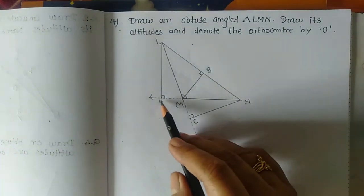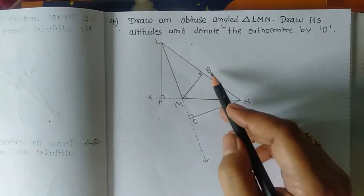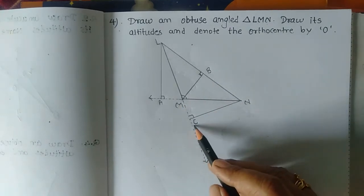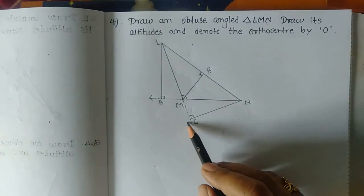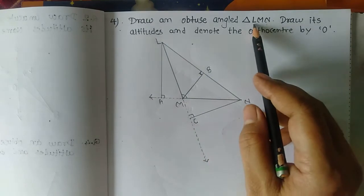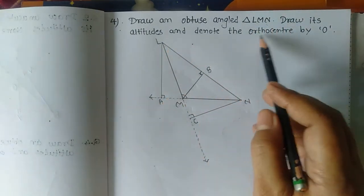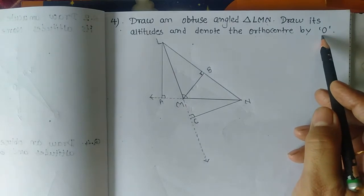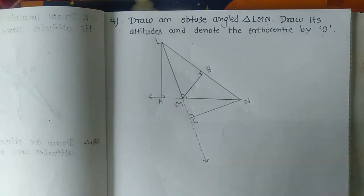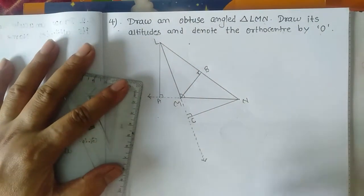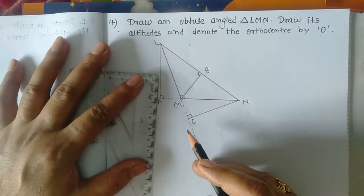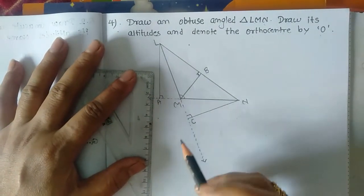Now segments LA, MB, and CN are the altitudes of triangle LMN. The question says to denote the orthocenter by O. This means write down the concurrent point of these three altitudes.